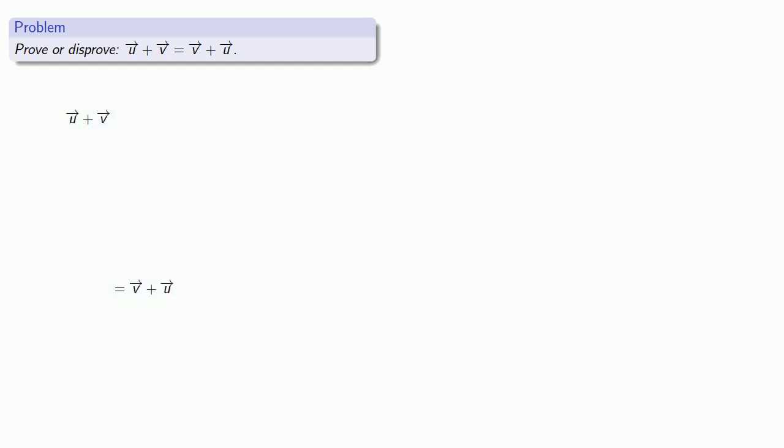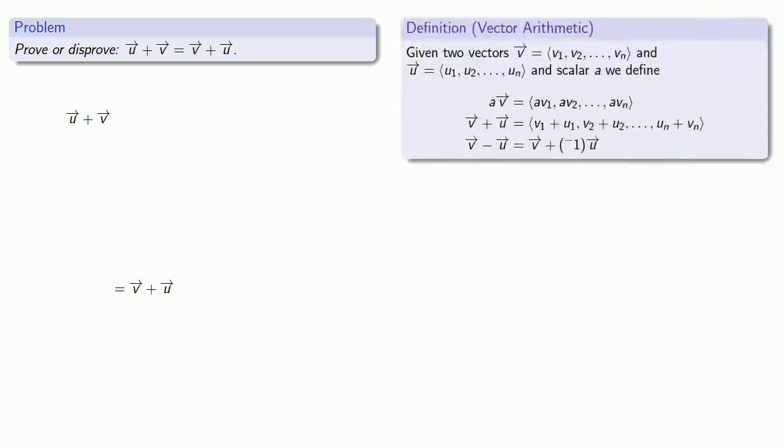Now remember, definitions are the whole of mathematics, all else is commentary. And so one of the most important things we can do is we can pull in any relevant definitions. And in this particular case, because we're looking at the sum of two vectors, we might want to pull in our definition for the sum of two vectors. And this tells us that the sum of two vectors is going to be found by adding the corresponding components of the two vectors.